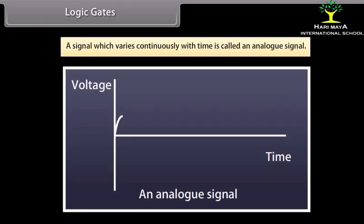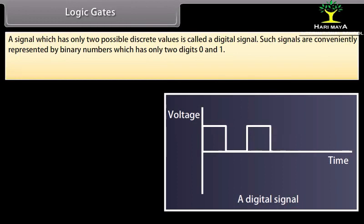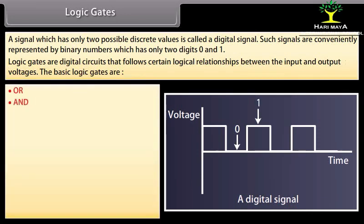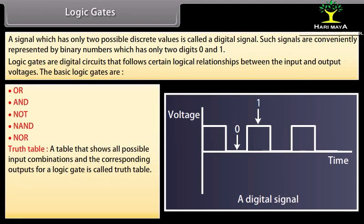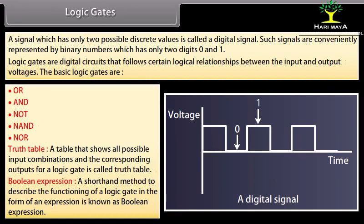Logic gates: A signal varying continuously with time is an analog signal. A signal with only two discrete values is a digital signal, represented by binary digits 0 and 1. Logic gates are digital circuits that follow certain logical relationships between input and output voltages. The basic logic gates are OR, AND, NOT, NAND, and NOR. A truth table shows all possible input combinations and corresponding outputs. A Boolean expression is a shorthand method describing the functioning of a logic gate.